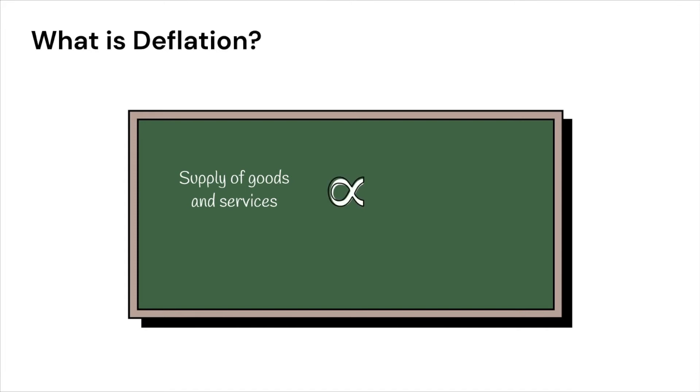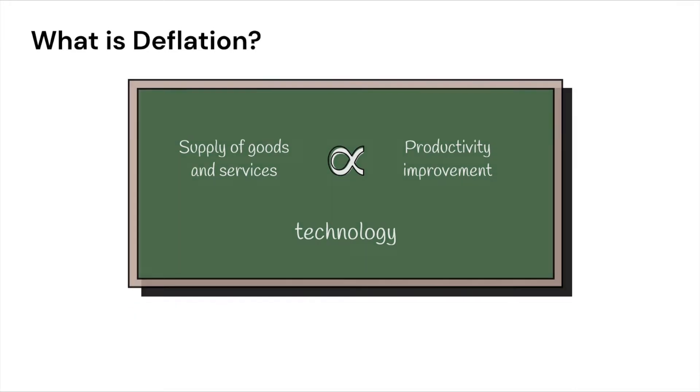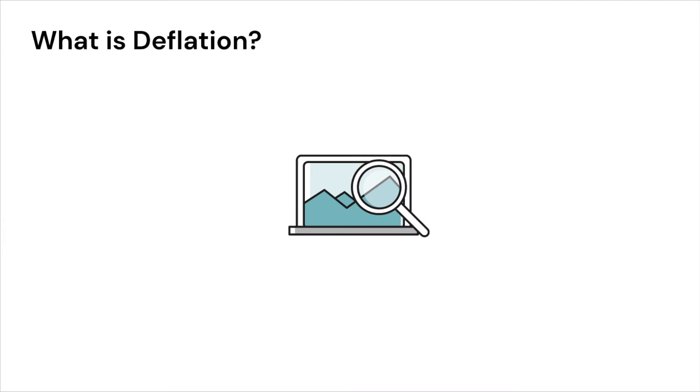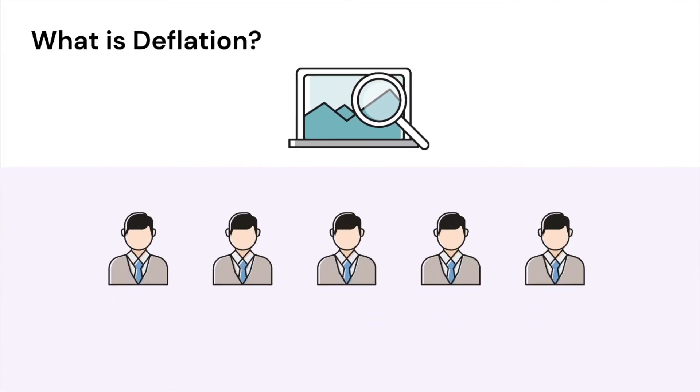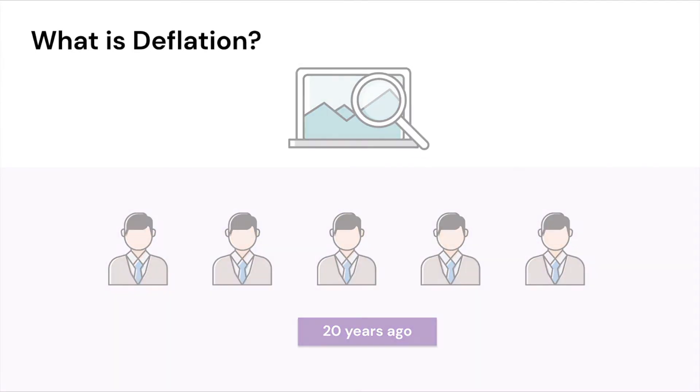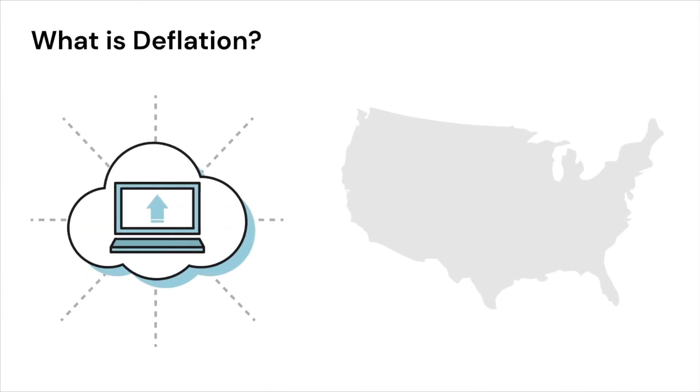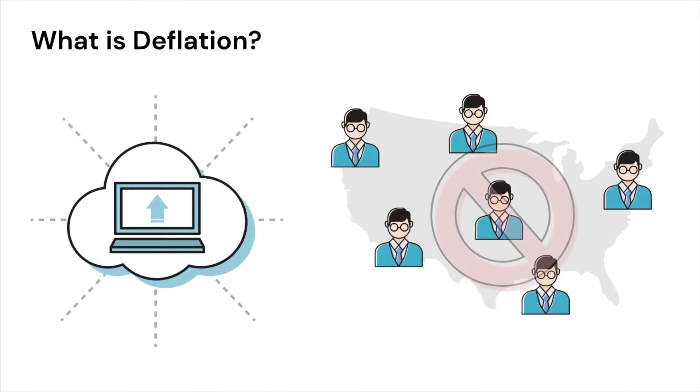A major cause for increase in supply of goods and services is productivity improvement. And in recent times, technology advances have played a key role in improving productivity. Think about this. A computer can do the task that probably five accountants did 20 years ago. Or for instance, cloud computing can reduce the need for having onshore IT personnel at every single physical office location.